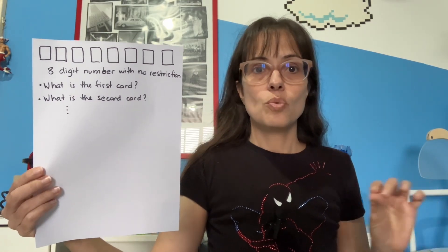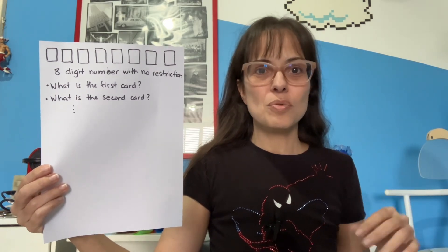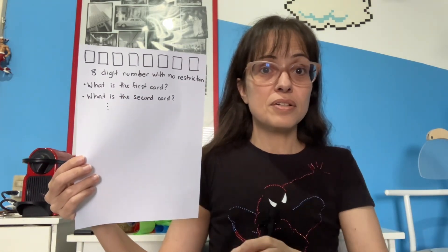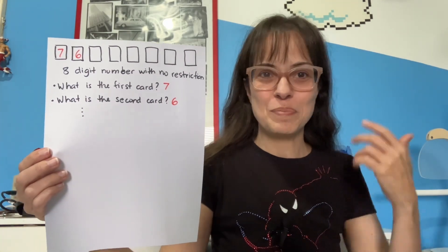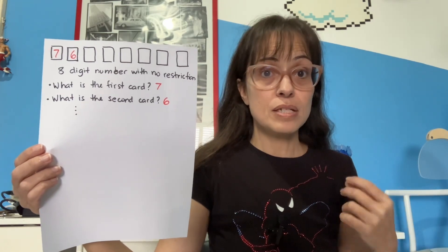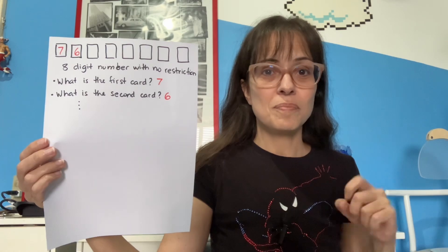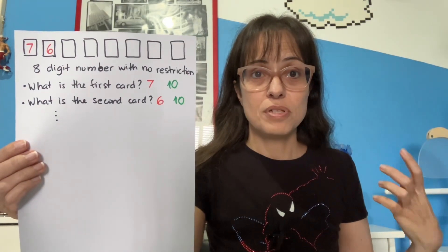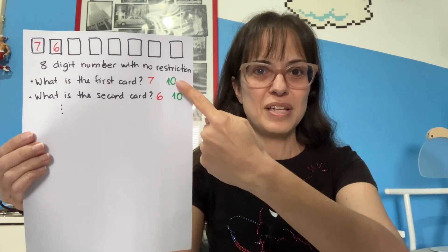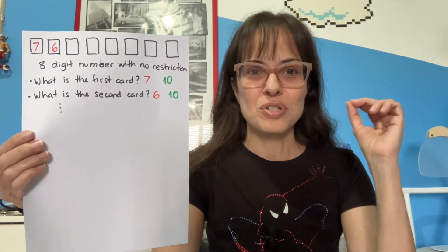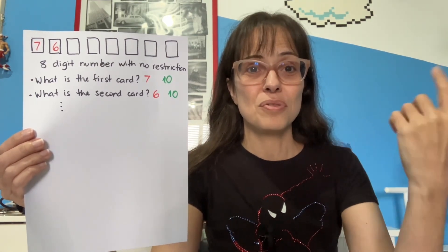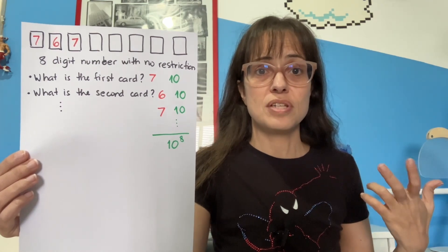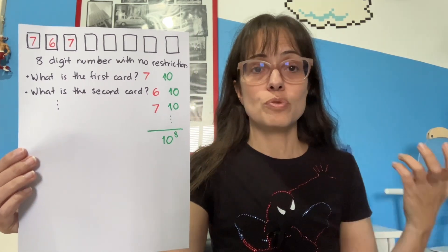If I wanted to make eight-digit numbers with no restrictions — not even the restriction that the number can't begin with zero — then it is okay to ask what is the first number, what is the second number, and so on. I had 10 different choices for both. There is no restriction, so you can repeat a number that came before. There were 10 possibilities for each digit, and in the end you multiply all those numbers. The answer is 10 to the power of eight.